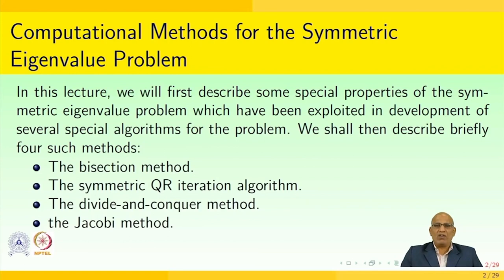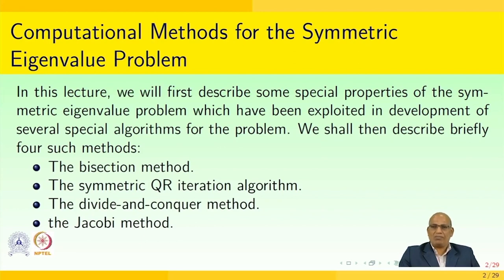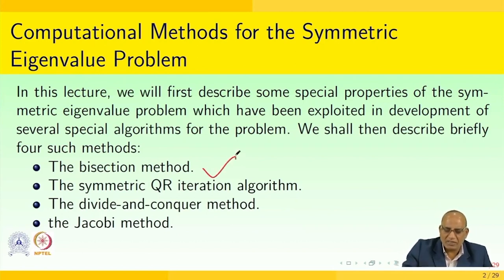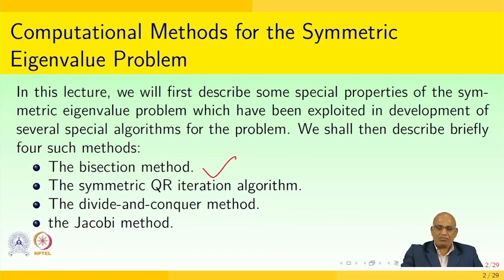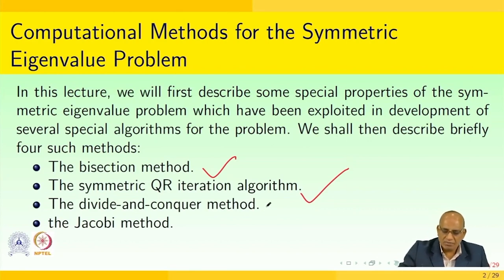Today we are going to have computational methods for the symmetric eigenvalue problem. In this lecture, we will first describe some special properties of the symmetric eigenvalue problem, which have been exploited in the development of several special algorithms for the problem. We shall then briefly describe four such methods: the bisection method, the symmetric QR iteration algorithm, the divide and conquer method, and the Jacobi method.